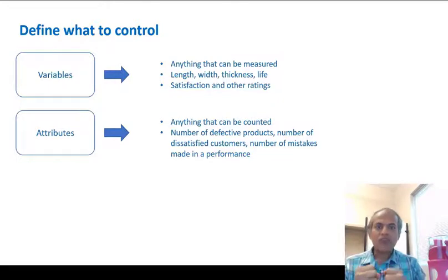And attributes is anything that can be counted. We don't need a measurement scale or anything. We just count one, two, three, four. Those are called as attributes. So number of defective products in a batch or number of dissatisfied customers. So if you have a flight and the flight has 400 customers, how many of those 400 were dissatisfied? Or number of mistakes made in a theater performance or something like that. Whenever we count or have a number, those are reflected by control charts for attributes.